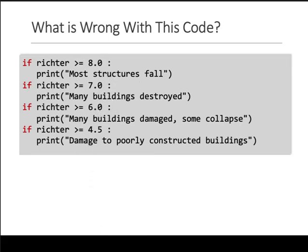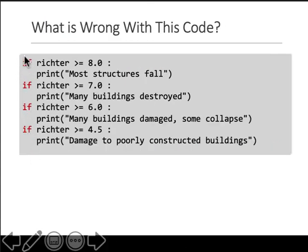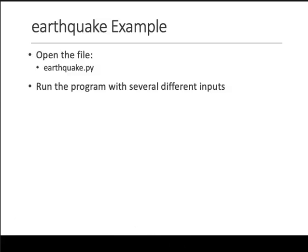But we don't want that, hence we use `elif`. The `elif` is a shortcut structure: if the first condition is true, execute that block and skip all remaining branches. With standalone `if` statements, control checks every condition independently. But with `elif`, once a true condition is found, control exits the chain. So that code using only `if` statements is wrong. The file is 'earthquake' — run it with several different inputs and see that it should make sense.